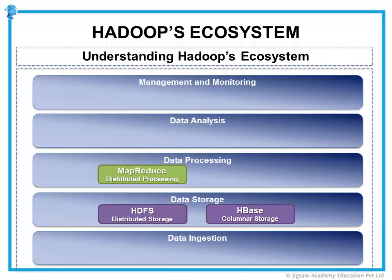Once we have the data stored, Hadoop's main execution framework MapReduce is used for processing. MapReduce is a programming model for distributed parallel data processing, breaking jobs into mapping phases and reduce phases. The framework takes care of scheduling tasks, monitoring them, and re-executing any failed tasks. Hadoop's MapReduce jobs typically run on distributed data stored in the HDFS, although it does run on data stored in HBase as well.